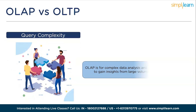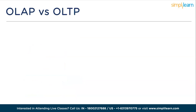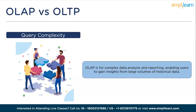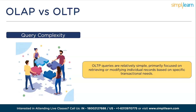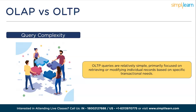Moving ahead, we have query complexity. OLAP queries are usually complex, involving aggregations, grouping, filtering, and calculations across multiple dimensions. Users need flexible ad-hoc querying capabilities to perform data analysis. OLTP queries are relatively simple, primarily focused on retrieving or modifying individual records based on specific transactional needs. Queries are typically short and transaction-oriented.